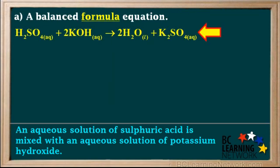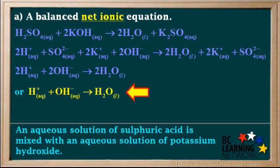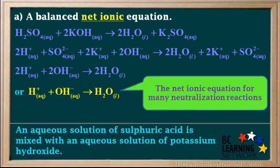To summarize: this is the balanced formula equation, this is the balanced total or complete ionic equation, and this is the balanced net ionic equation. Note that H plus plus OH minus forming H2O is the net ionic equation for many neutralization reactions.